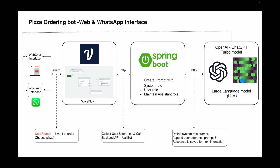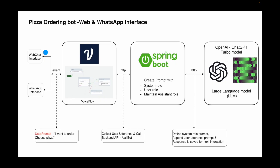For example, if the user says 'I want to order cheese pizza,' this is captured as input in VoiceFlow and sent as input to the SpringBoot application for further processing. In the SpringBoot application, we define the system role with instructions and tasks which the LLM would follow. Then we define the user role appending the user input. Both the system prompt and user prompt are together sent to ChatGPT. The ChatGPT model, based on the system role instructions, acts upon the user prompt and provides the response in the form of an assistant. This happens through the Completions API invoked from the SpringBoot application.